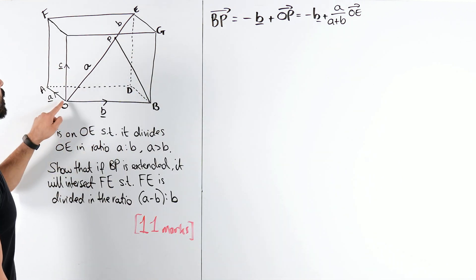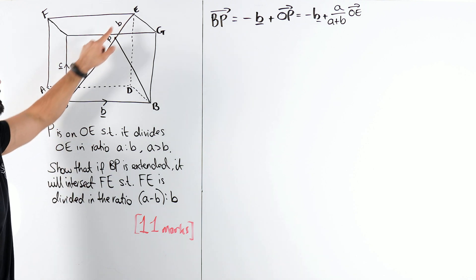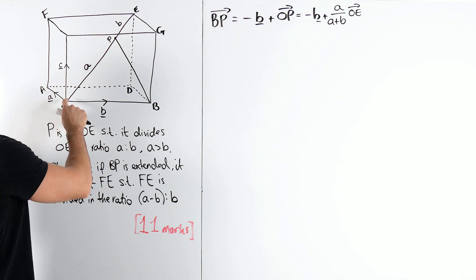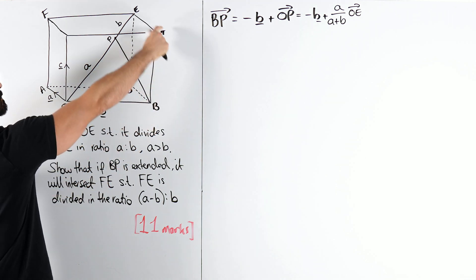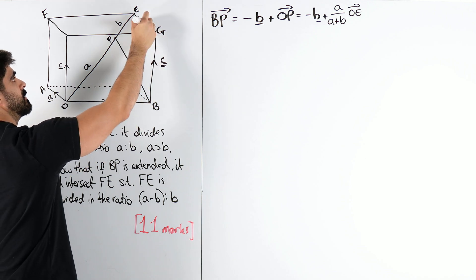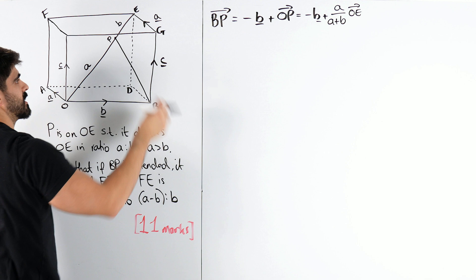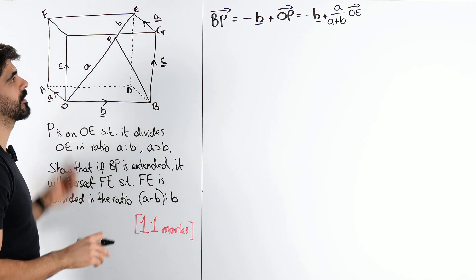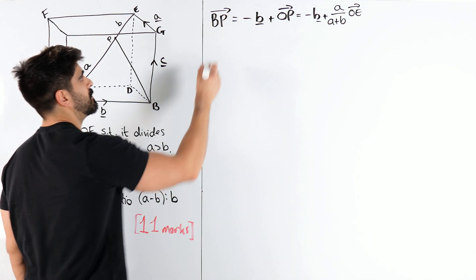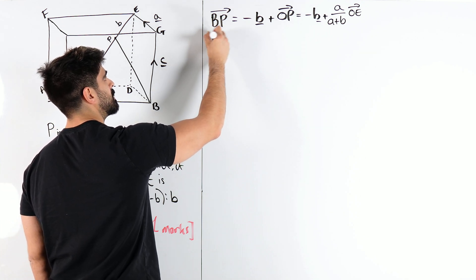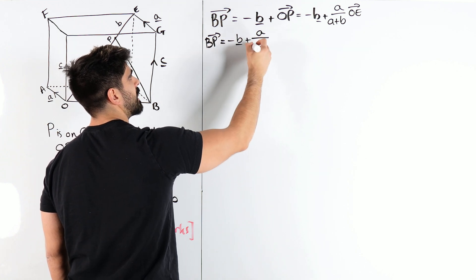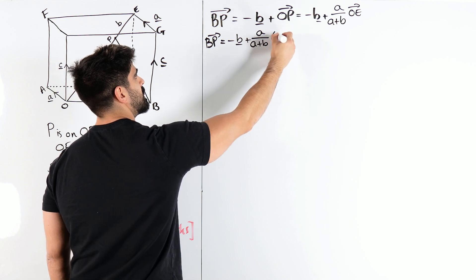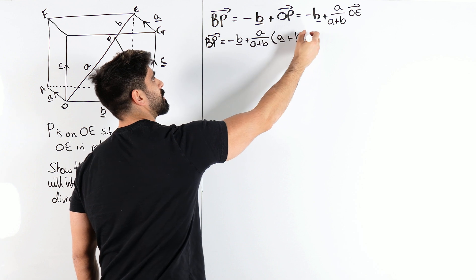And now we have to find O to E. To go from O to E, I could do B plus C, because there's your vector C. Yeah? So, B plus C plus A. Alright? Because they told us, I haven't written it down, this is a cuboid, these are all parallel vectors. So, we get BP is minus B plus A over A plus B, lots of A plus B plus C.